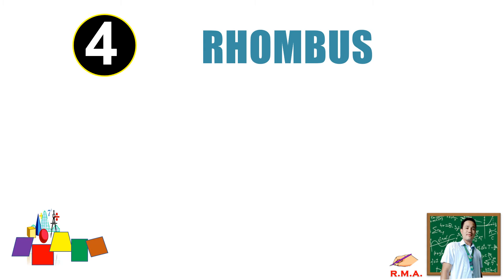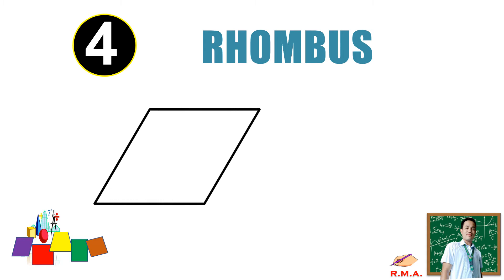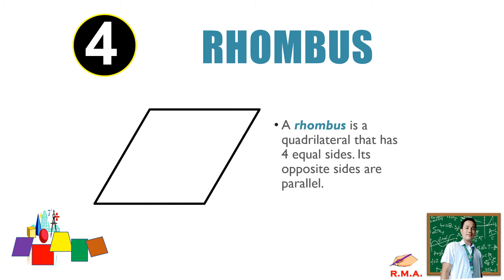Next, we have number four: rhombus. A rhombus is a quadrilateral that has four equal sides. Its opposite sides are parallel.